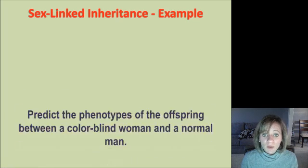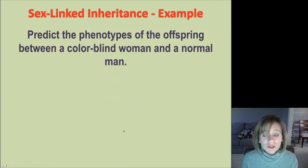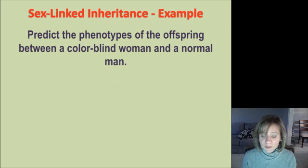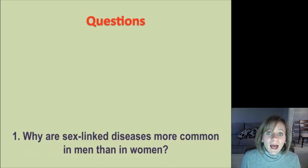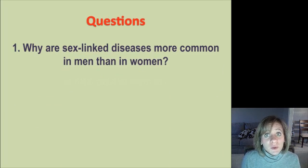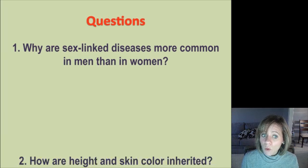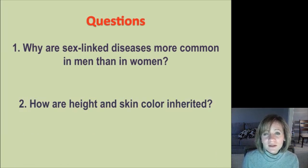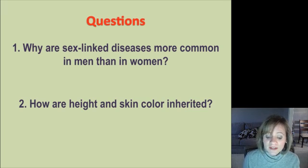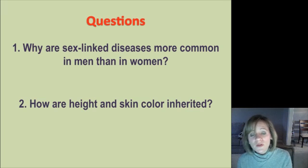Now do this last example on your own. Show the Punnett square and the genotype and phenotype ratios of the offspring. Then answer these two questions: Why are sex-linked diseases more common in men than in women? Remember, men have one X and one Y. And do a little outside research: how are height and skin color inherited — are they simple Mendelian genetics or a non-Mendelian pattern of inheritance?